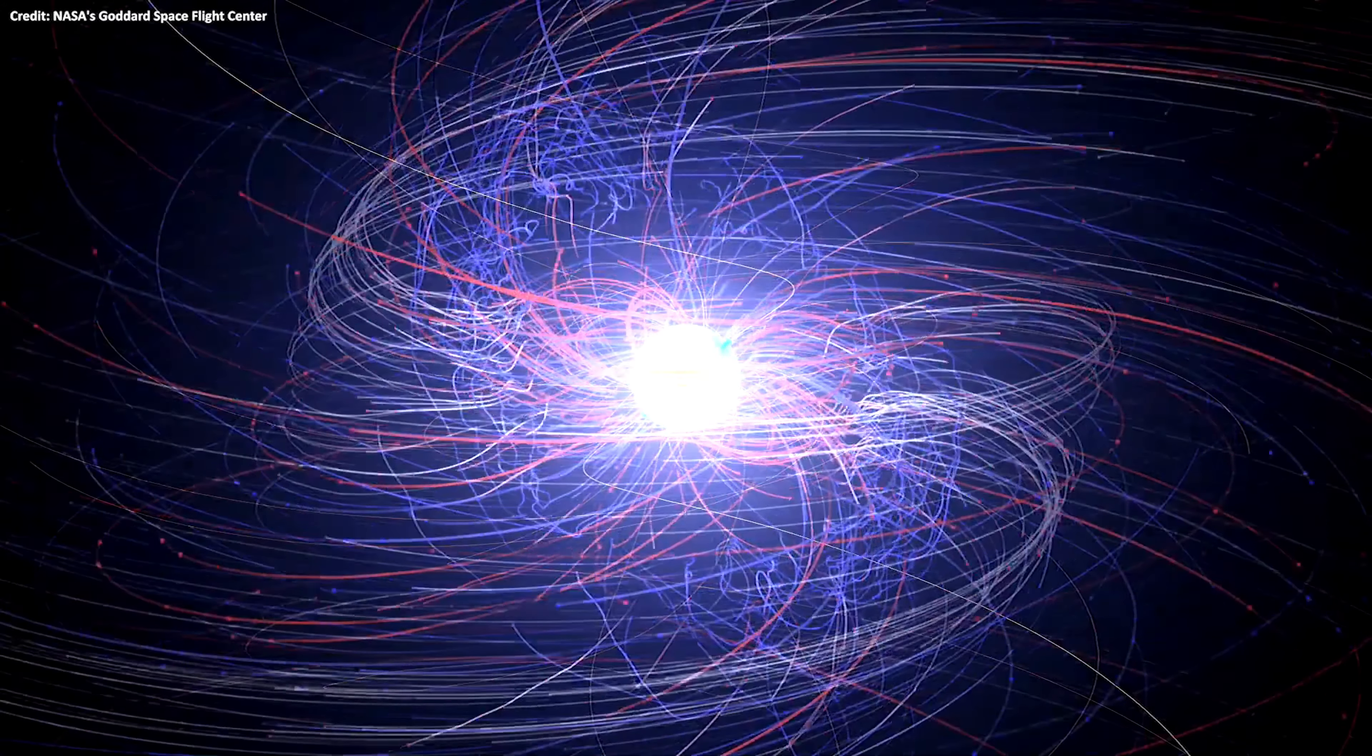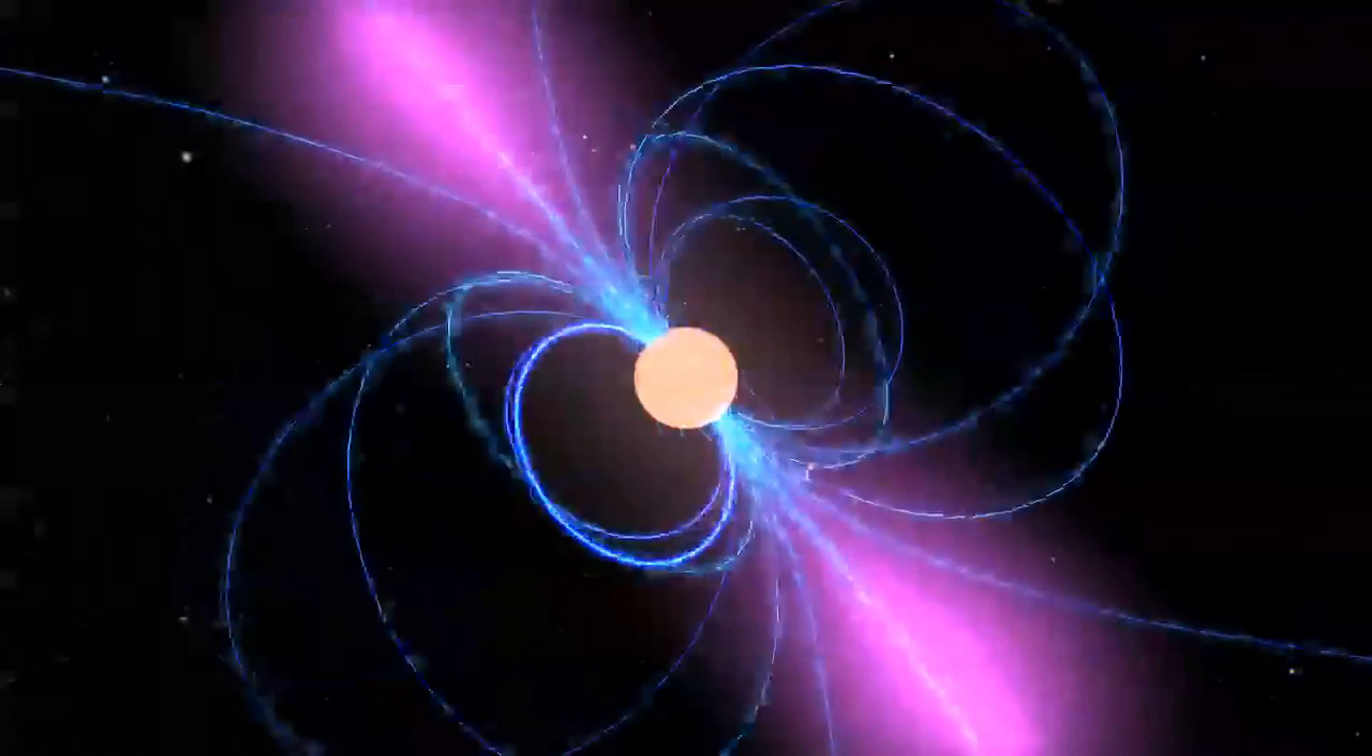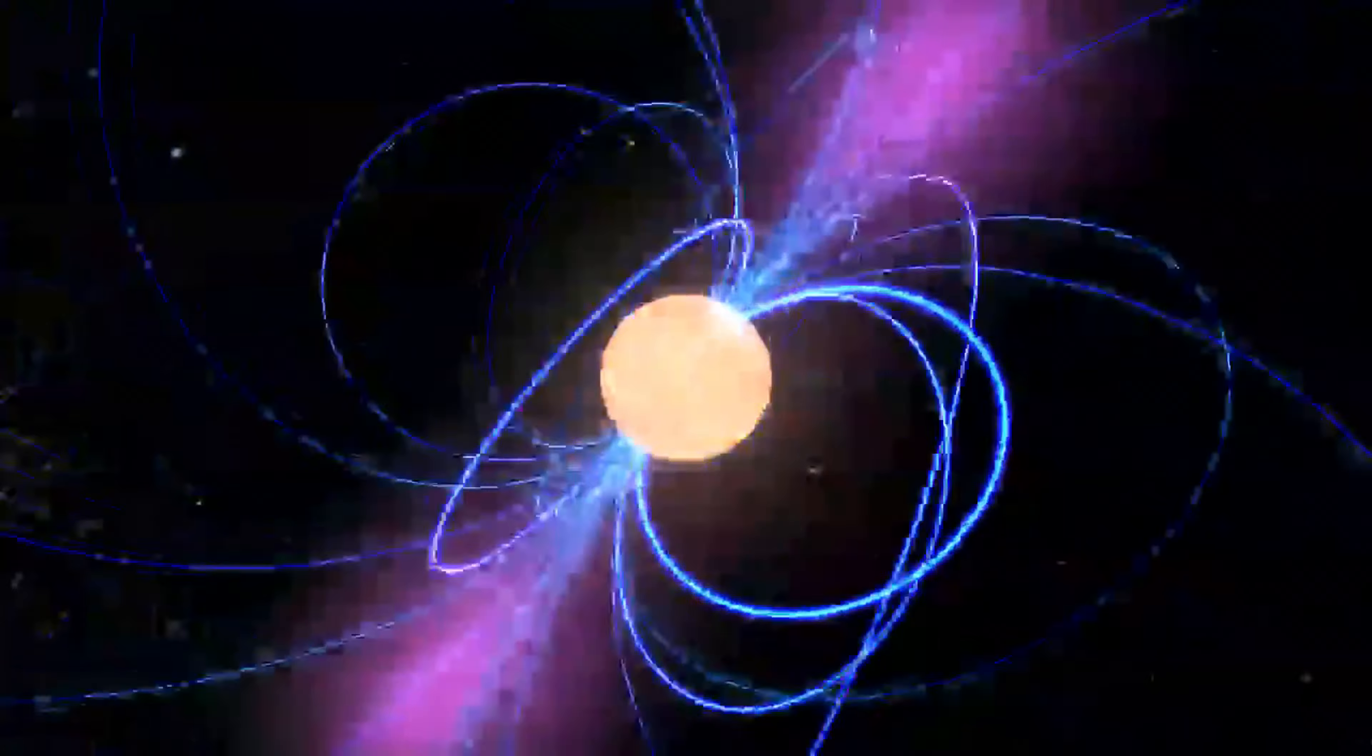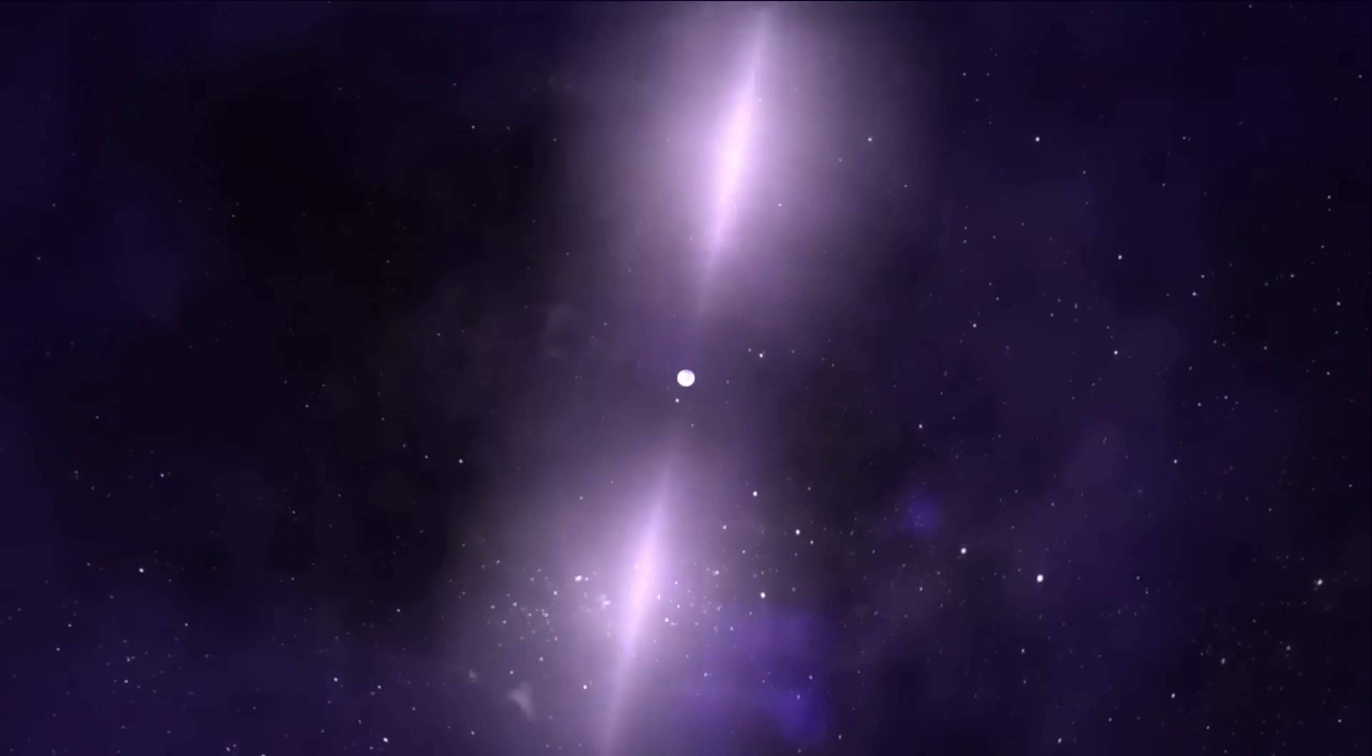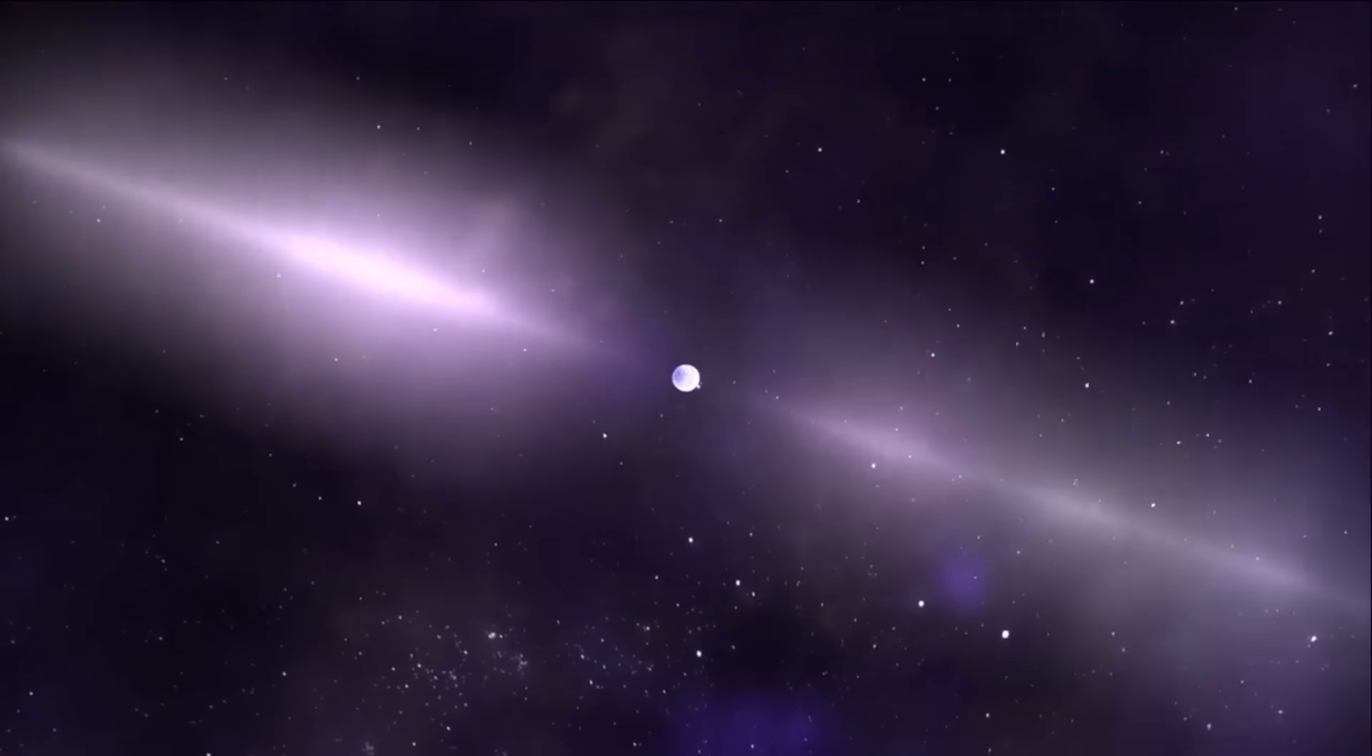One possibility is a sudden shift in the magnetar's already incredibly strong magnetic field. Imagine a giant invisible magnet experiencing a sudden jolt, causing its lines of force to twist and realign in a dramatic fashion. This shift, scientists theorize, could be responsible for the emission of the circularly polarized radio waves.